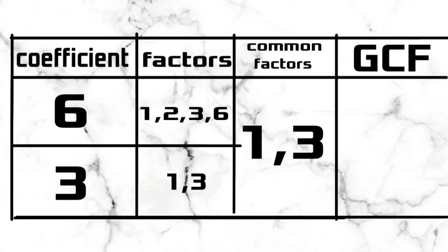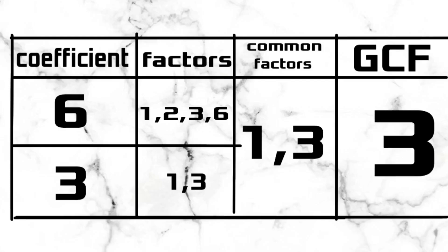Taking out the common factors, we are left with 1 and 3. Note that 1 cannot be a GCF of 2 given numbers that are prime numbers, thus giving us 3 as the GCF.